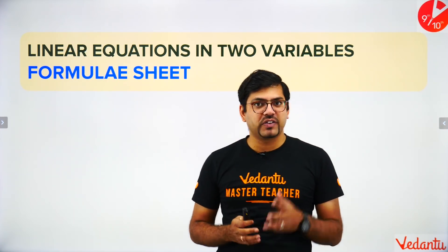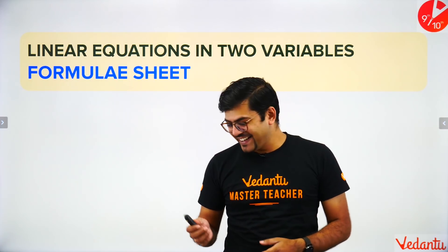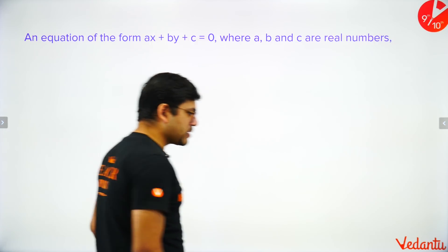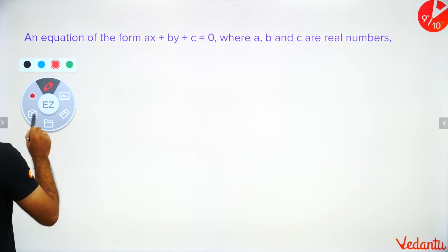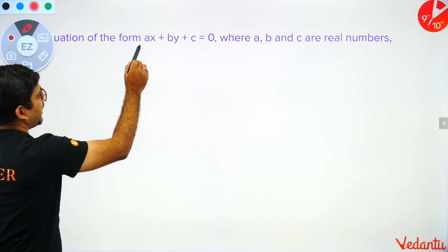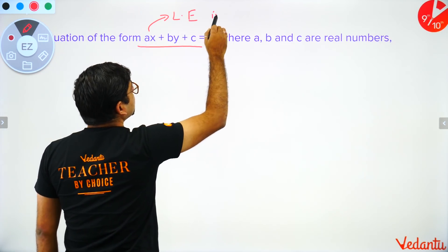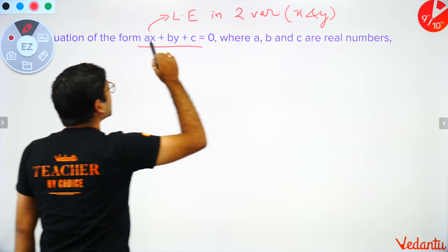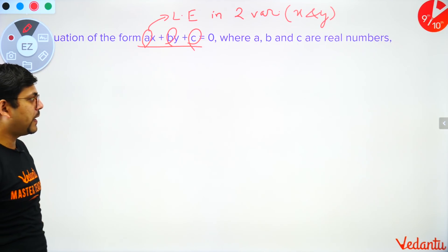Today's chapter is linear equations — we have already done three chapters: real numbers, polynomials, and coordinate geometry. This is the fourth chapter. The most basic thing is that a linear equation in two variables is of the form ax + by + c = 0, where a is the coefficient of x, b is the coefficient of y, and c is the constant.